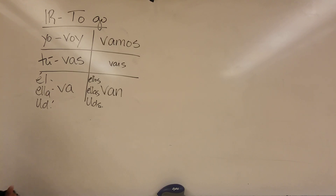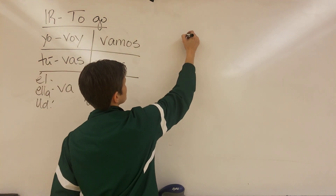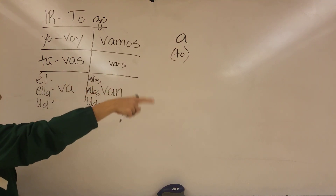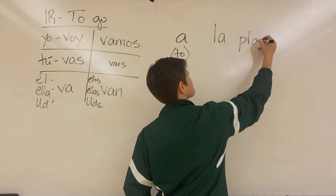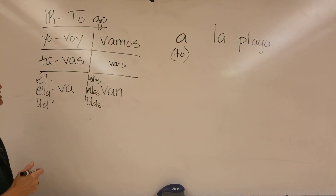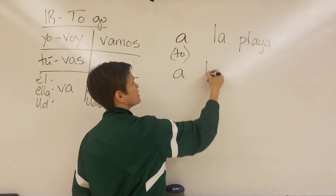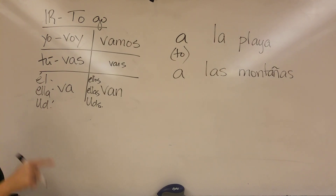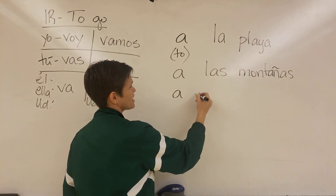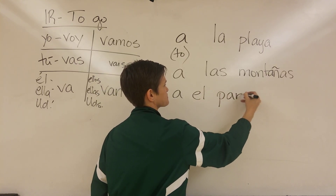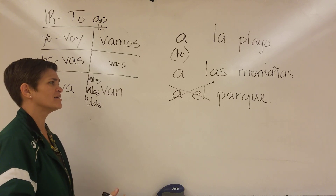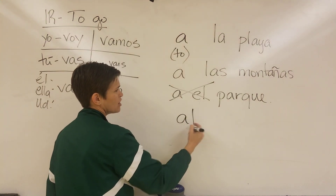When we want to say that we want to go to a certain place, we're going to use the word to. In Spanish, the word to is a. So if I'm going to the beach, we say voy a la playa — I'm going to the beach. If I'm going to the mountains, I would say voy a las montañas. But if I'm going to a masculine location, I cannot say voy a el parque. Just like de el sounds weird, a el also sounds weird. So in Spanish, they're going to change it to al parque.